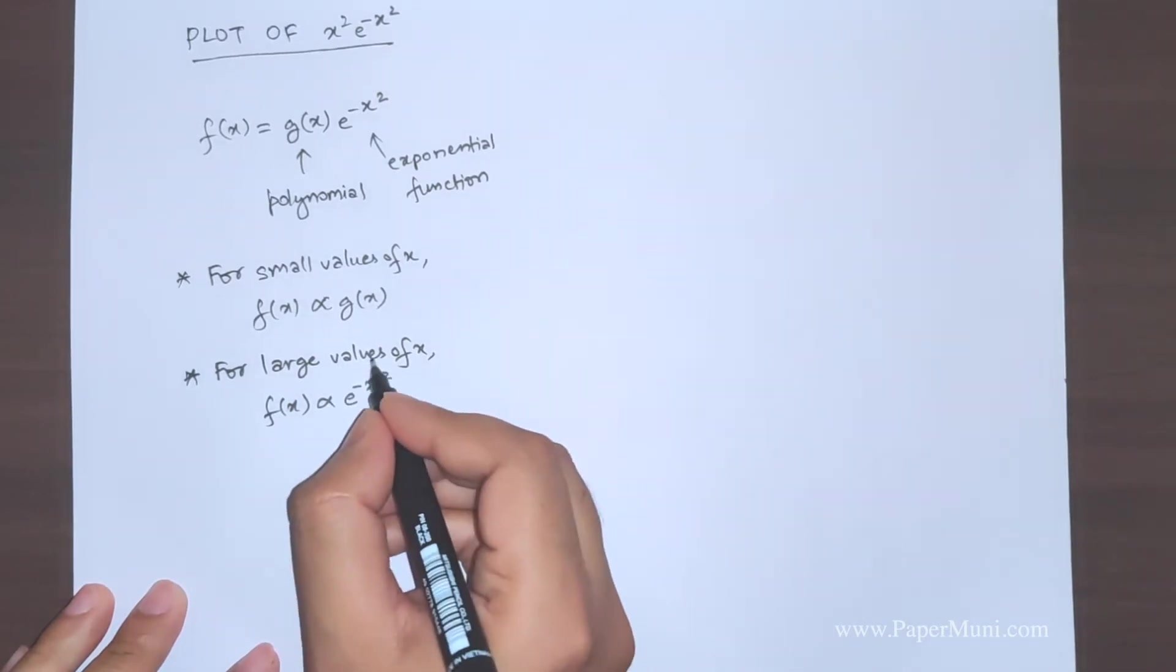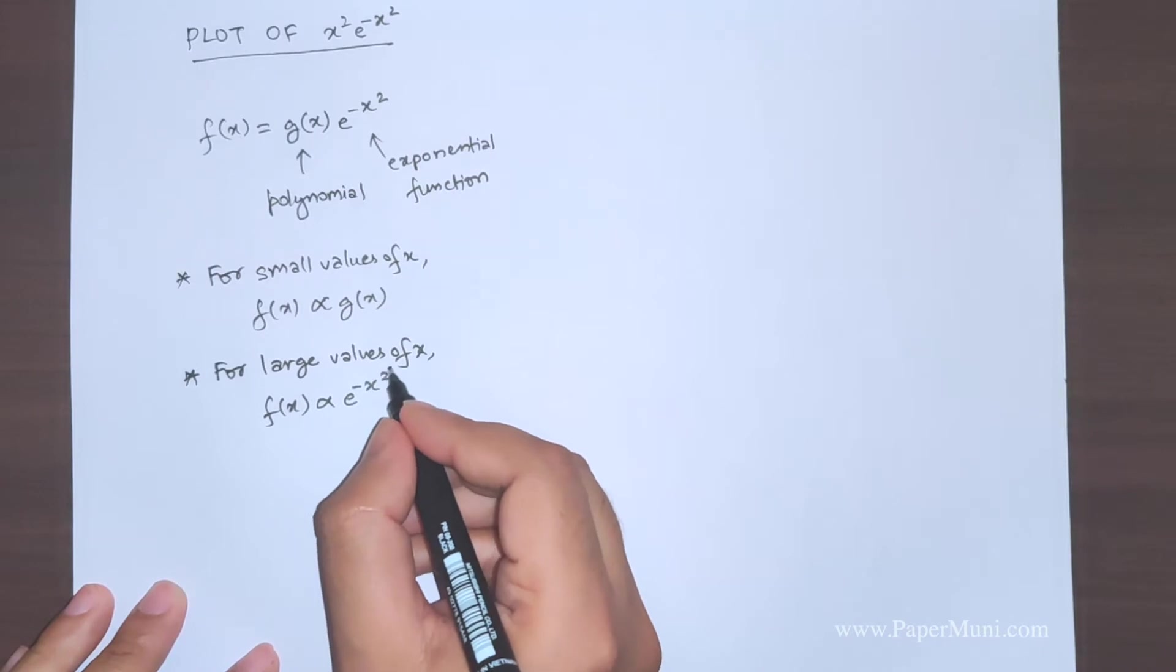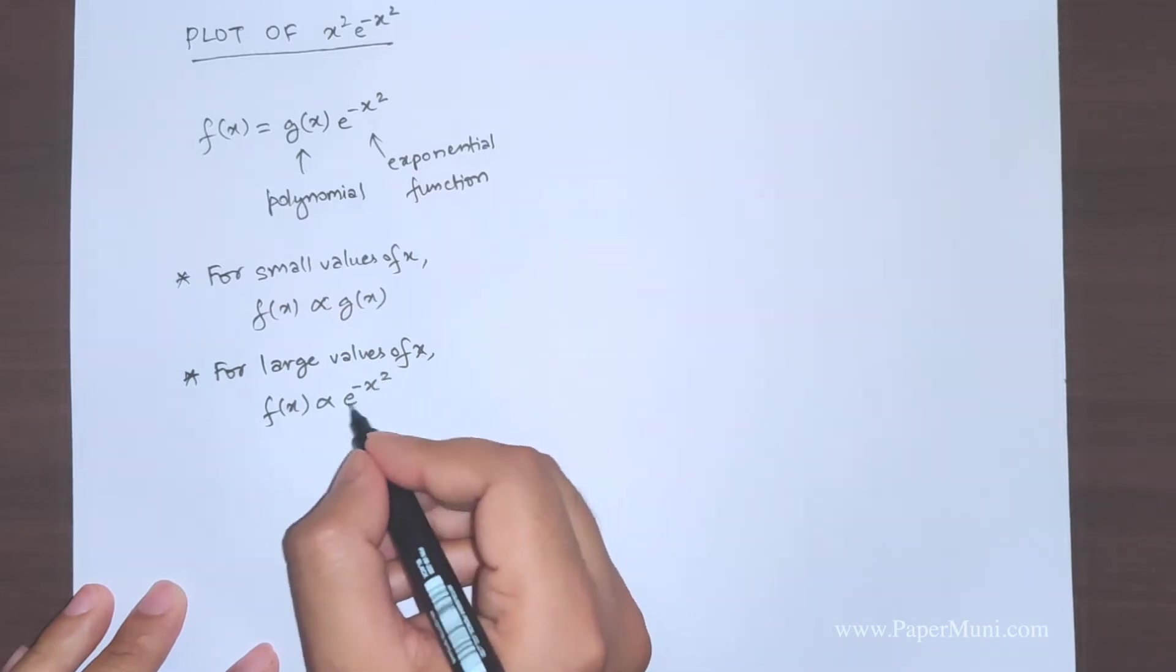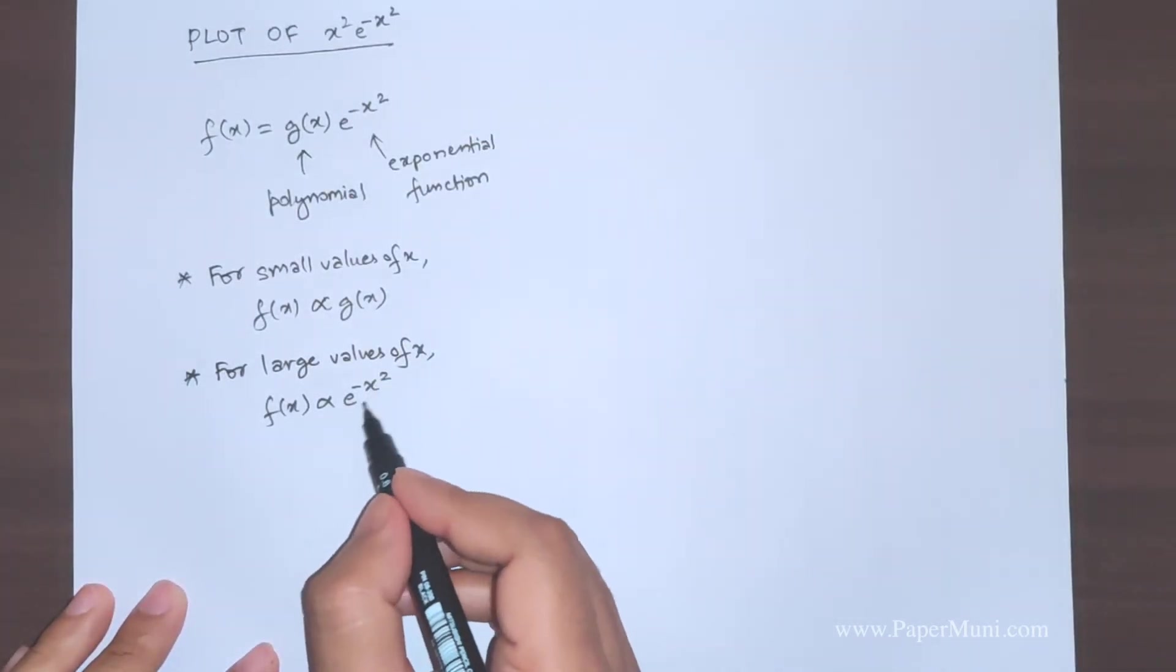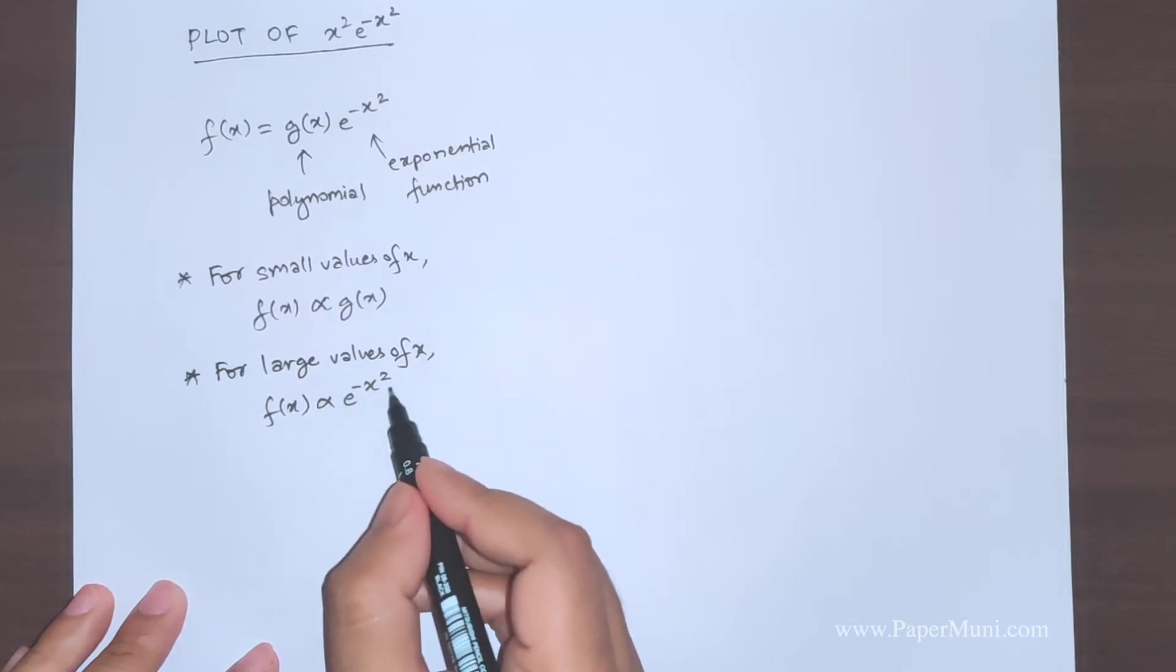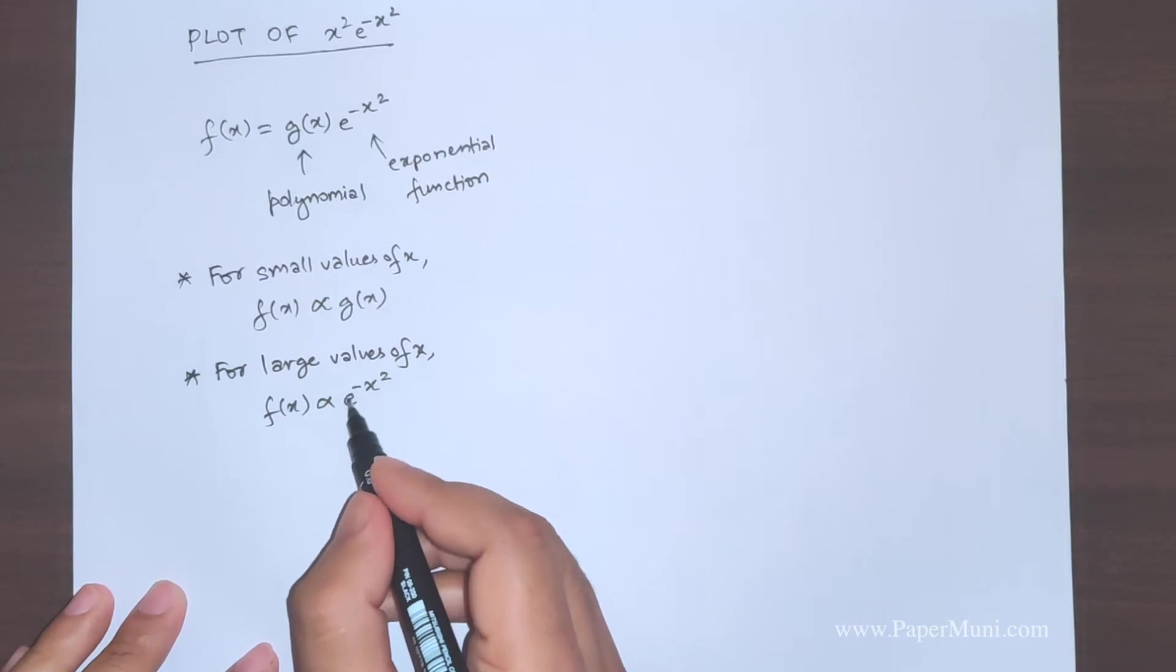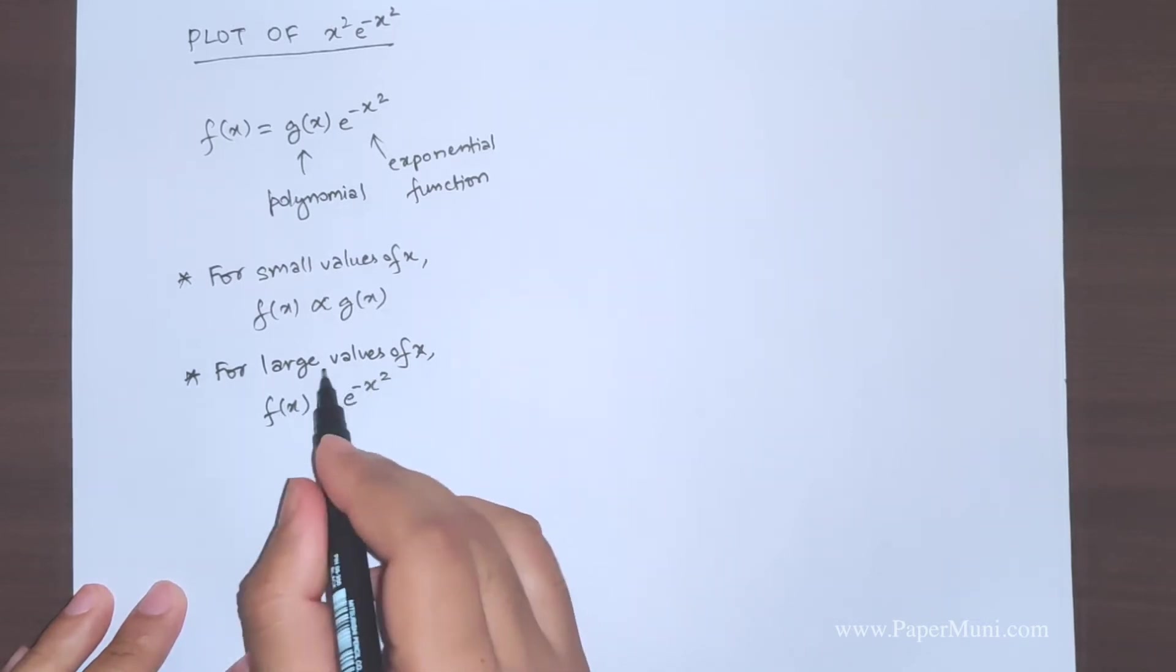In this case the large values means that this will dominate. Large values means like 2, 3, 4, 5, x equal to these values, 10. So if you put these values here you will find that the contribution, this part affects the function more than this part. The only thing that matters is this will contribute more to this function at large values of x.